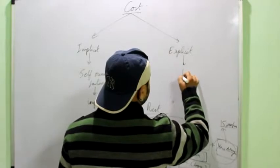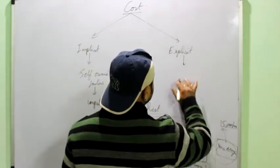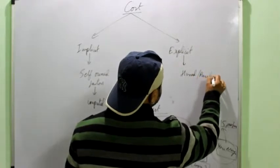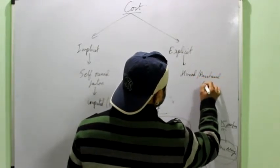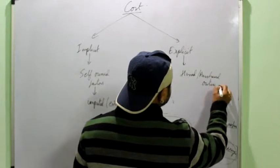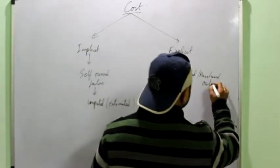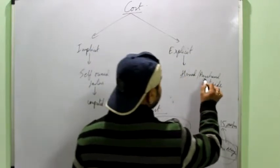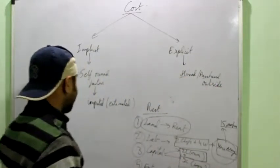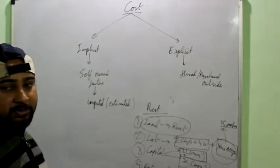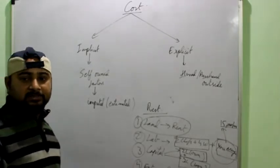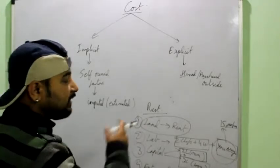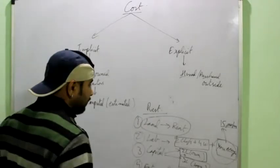Explicit cost is the cost of the factors which are hired or purchased from outside used in the production process. Again, I am mentioning two words hired or purchased. Actually, there are certain factors which can only be hired which you cannot purchase. For example, the labor, you can only hire it, you cannot purchase it. But a machine you can purchase.